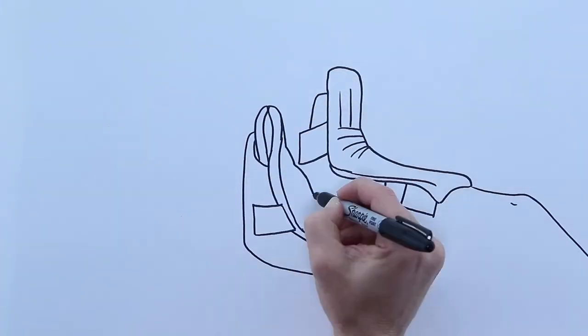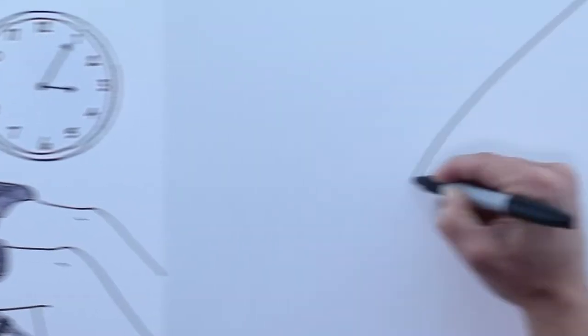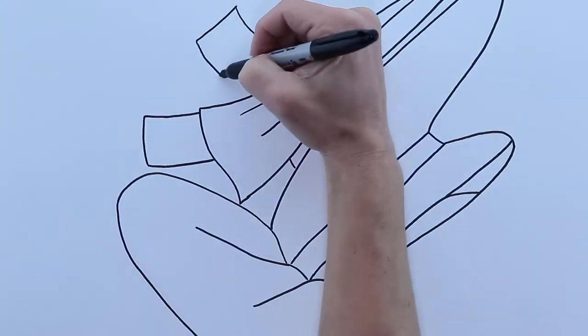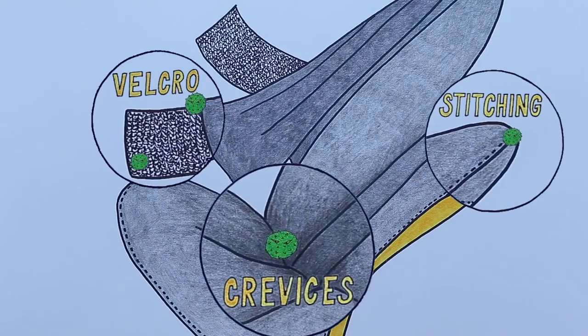Now position those feet in lithotomy stirrups where they will incubate during surgery. Lithotomy stirrups are well-designed to safely support and position the patient's leg during surgery, but with crevices, stitching, and velcro, they're a great hiding place for bacteria.